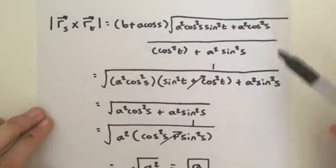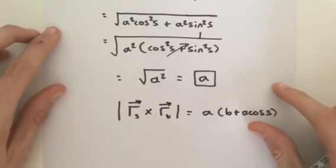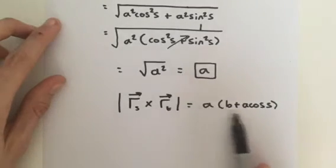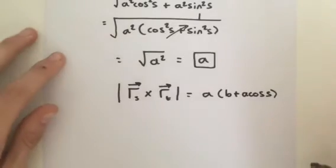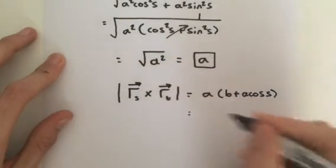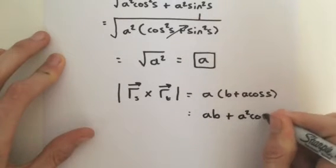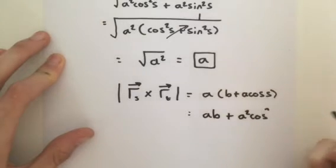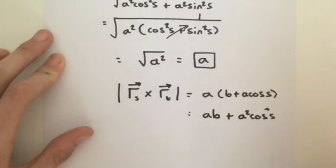We just simplified the square root. So we have taken the magnitude of the cross product, which we have here. Simply expand this, we're going to get a times b plus a squared cosine of s.